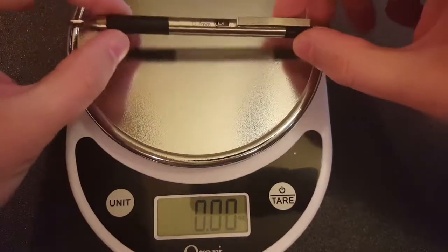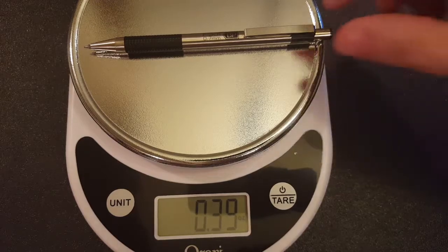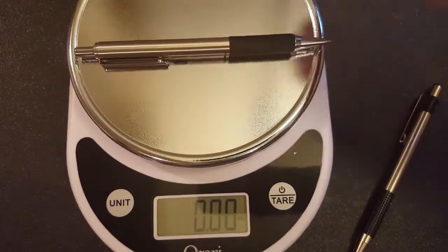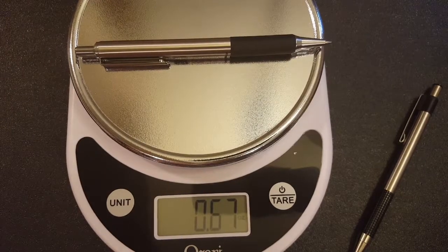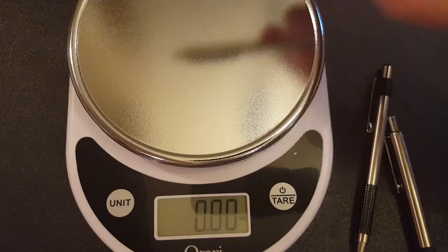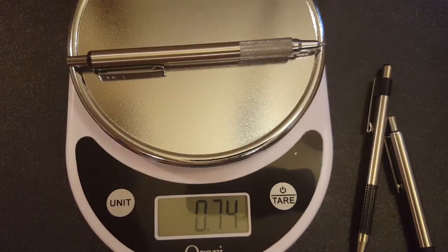For absolute weight on these, the F-301 weighs in at about 0.39 ounces. The F-402 weighs in at about 0.67 ounces. And the F-701 right out of the box weighs in at about 0.74 ounces.